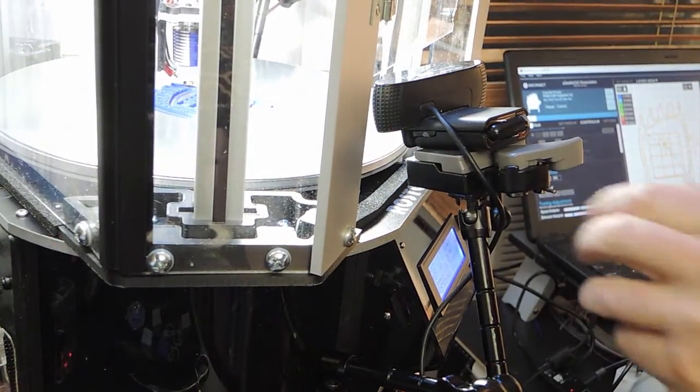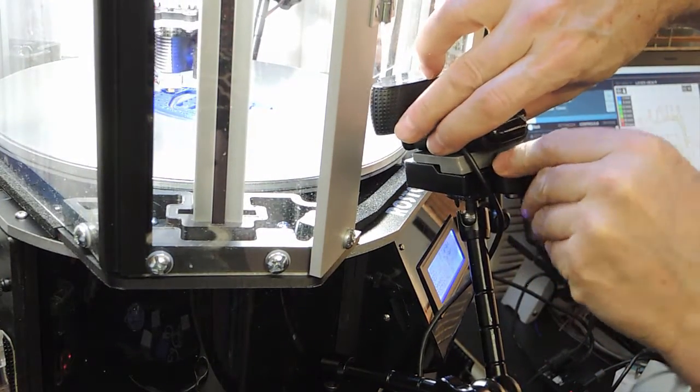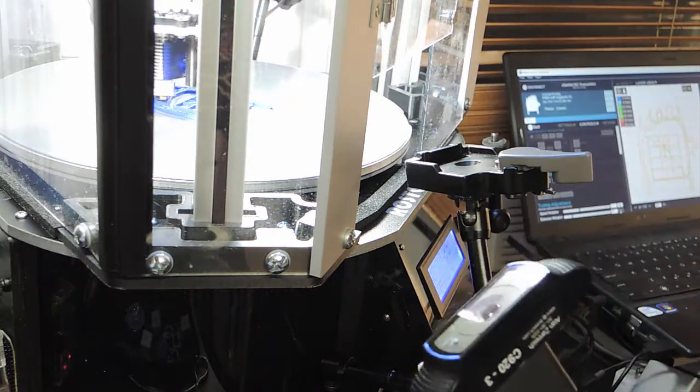The webcam is mounted to a quick release plate that gets snapped into a receiver that's attached to the arm.